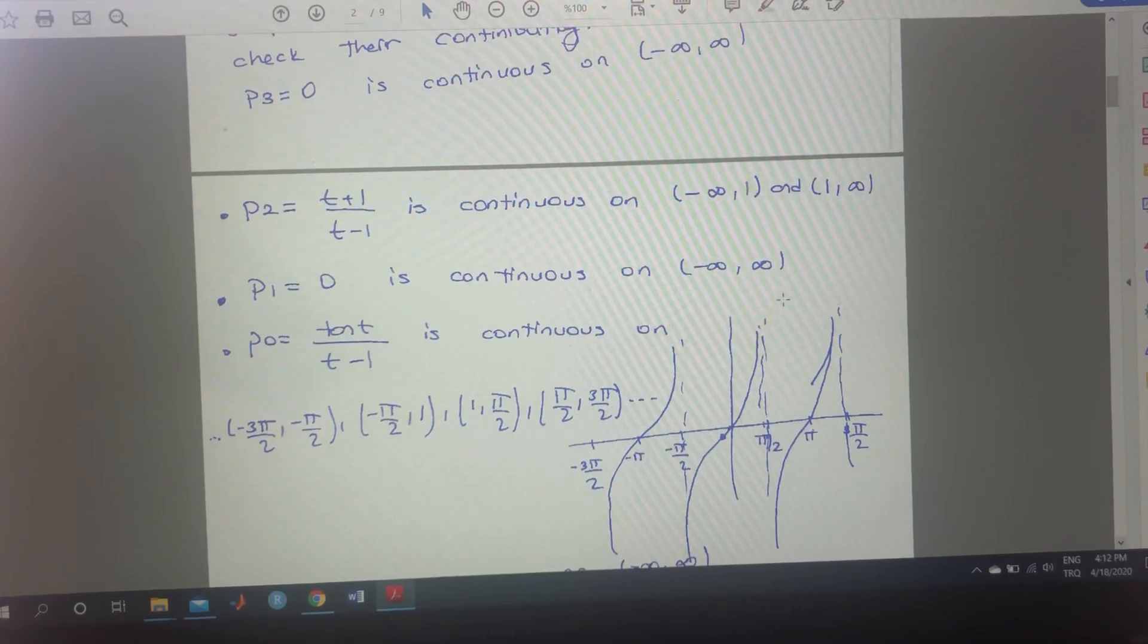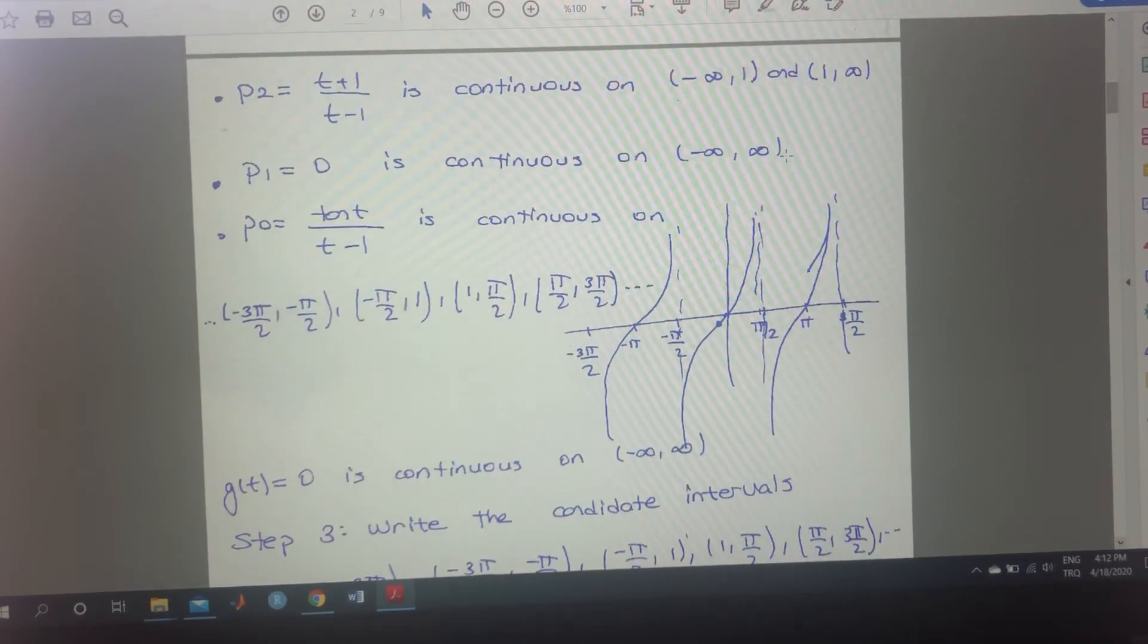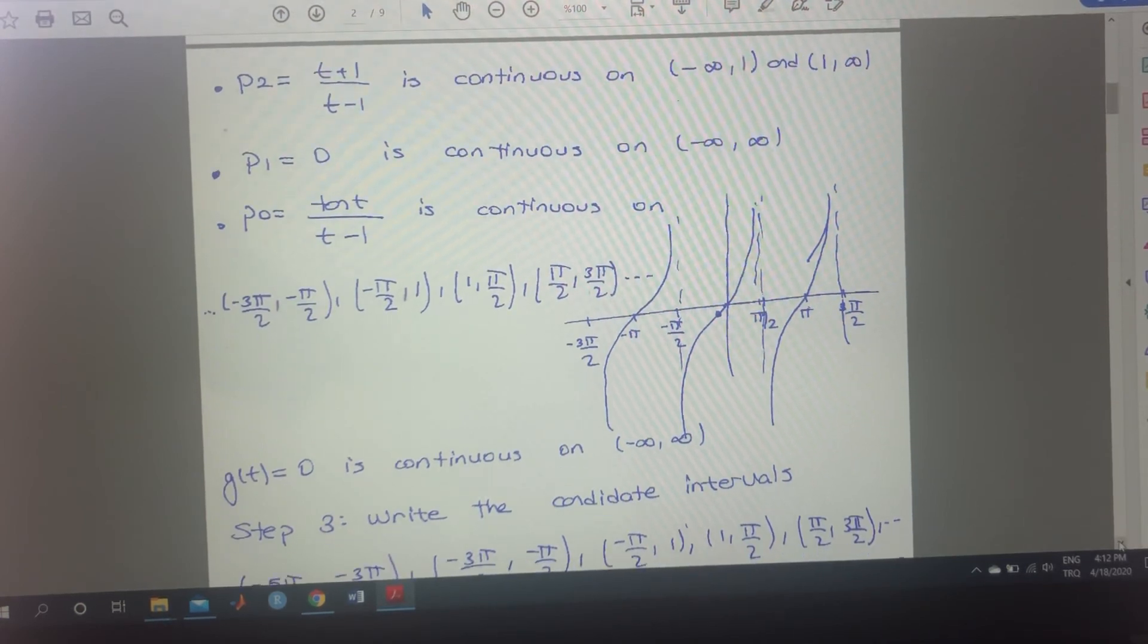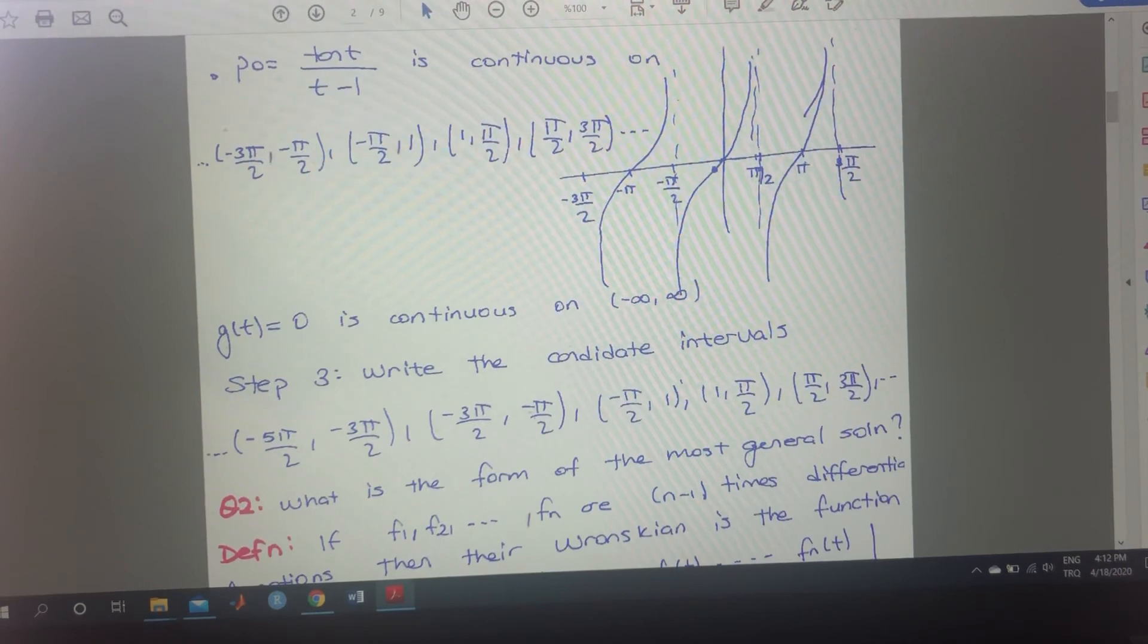That's good. Because 1 also was not included for p2. That's why for g of t, since it's 0, it's continuous everywhere. And now we have to combine all those terms. And since we have only 1 should be out. And this is the continuity region for p0.